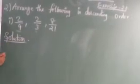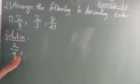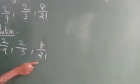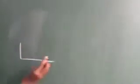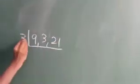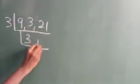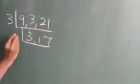Write the question as it is: 2/9, 2/3, and 8/21. Now take the LCM of 9, 3, and 21. Divide by 3: 3 threes are 9, 1 three is 3, 7 threes are 21. This gives quotients 3, 1, and 7.